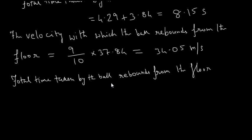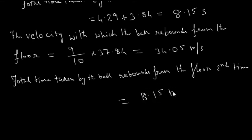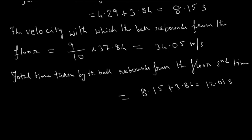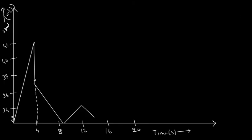The total time taken by the ball to rebound from the floor the second time is 8.15 + 3.86, which equals 12.01 seconds. The speed-time graph can now be plotted as given below, showing the graph between time and speed.